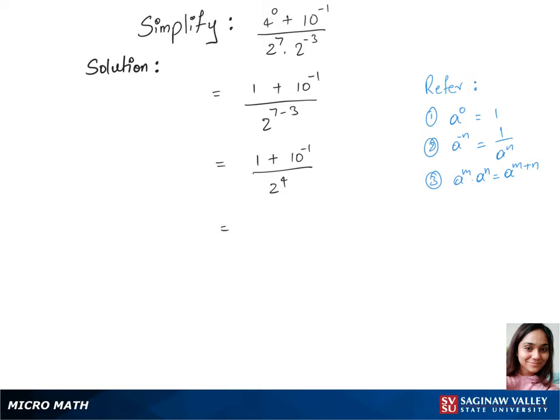And now we have 1 plus, we can write this 10 power minus 1 as 1 over 10 using rule 2, over 2 power 4 is 16.